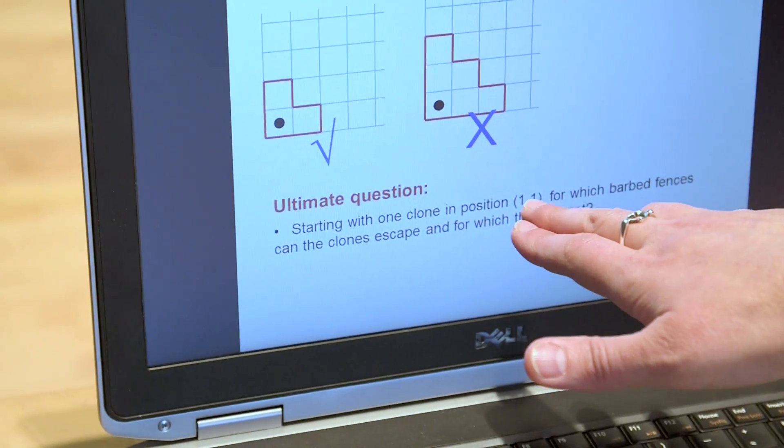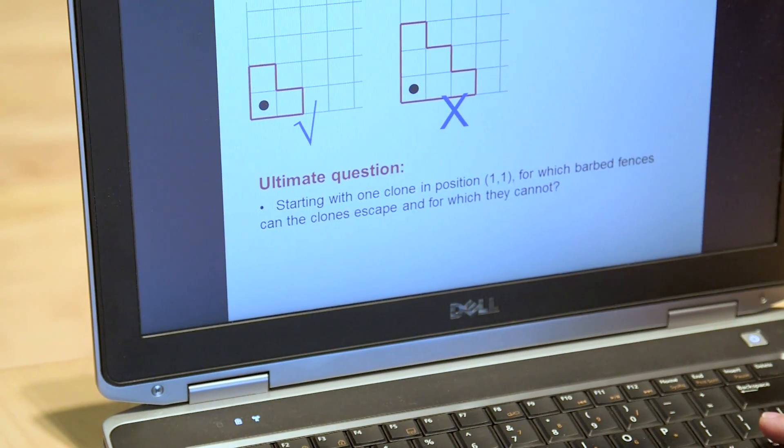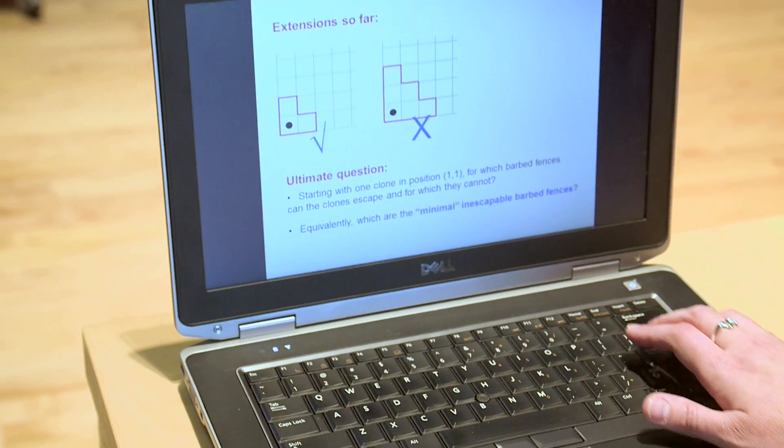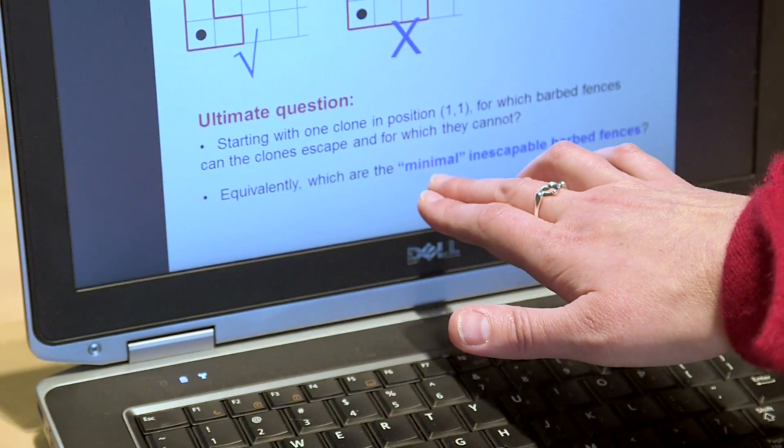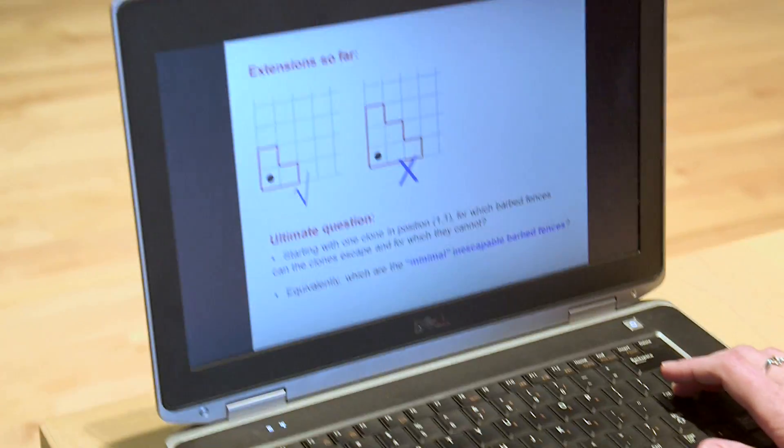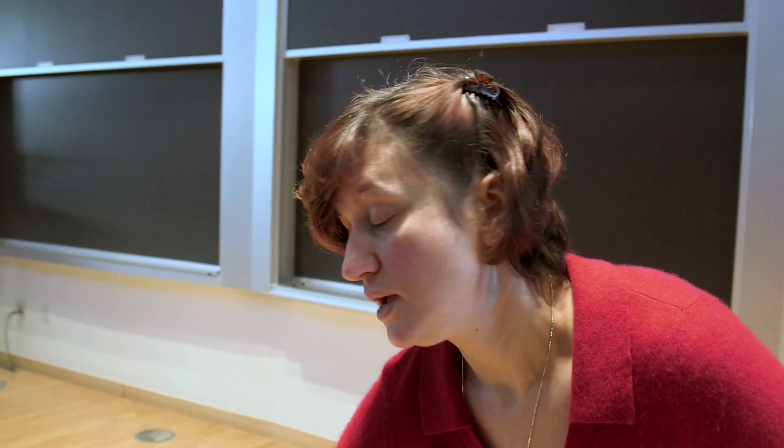Starting with one clone in position 1-1, for which barbed fences can the clones escape and for which they cannot? Or a better question would be, which are the minimal inescapable barbed fences? Can this question be answered exactly? Find a classification, a list of all minimal inescapable fences?